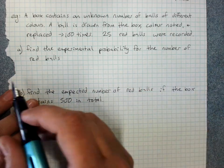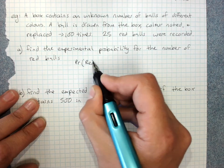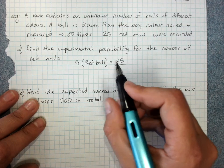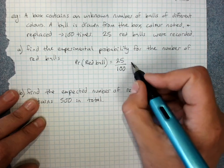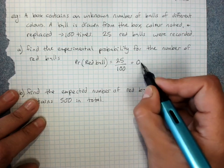Find the experimental probability for the number of red balls. Notation's still the same. There were 25 red balls recorded and the trial was repeated 100 times, and we write that as a decimal: 25 divided by 100 is 0.25.